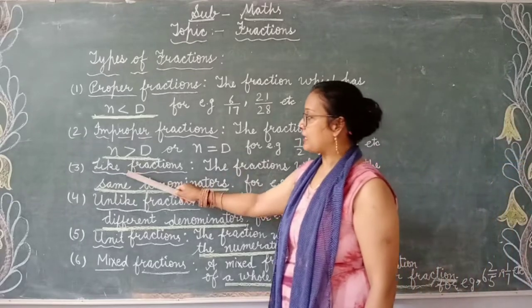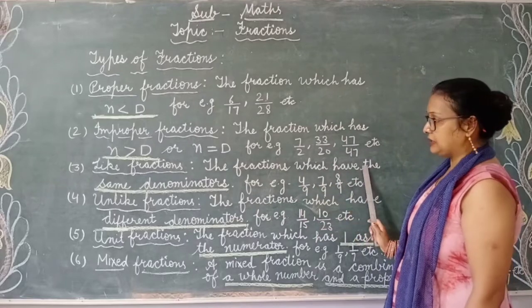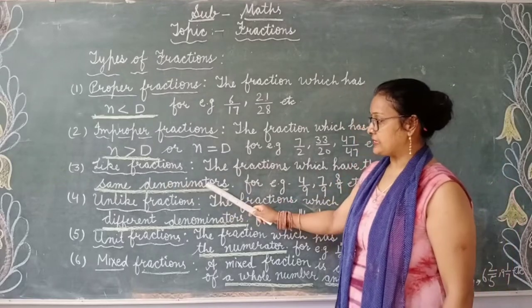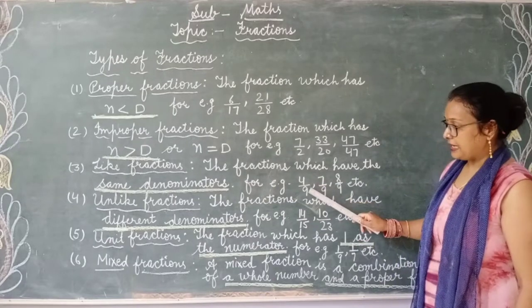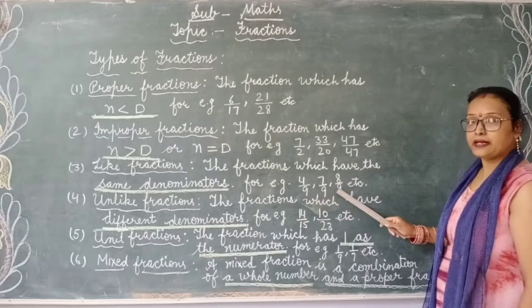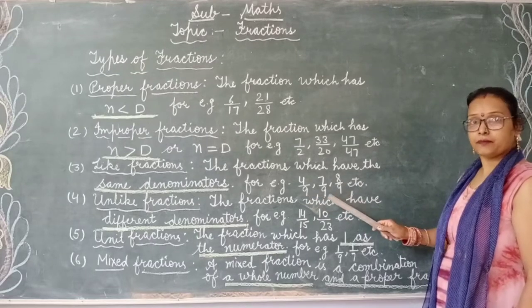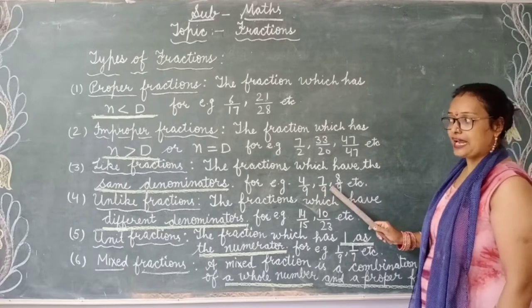Next is like fractions. The fractions which have the same denominators. For example, 4 by 9, 7 by 9, 8 by 9. Here all the denominators are same. All the denominators are 9. It's called like fractions.